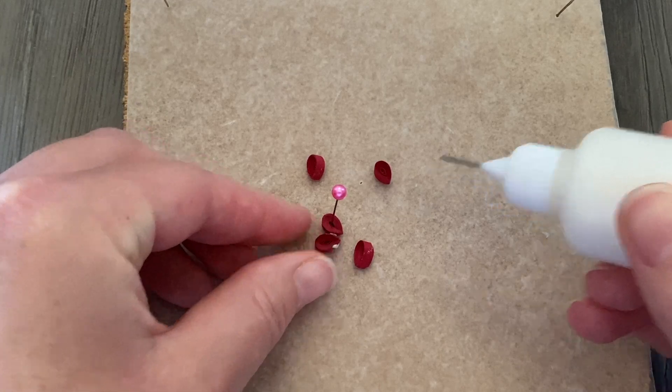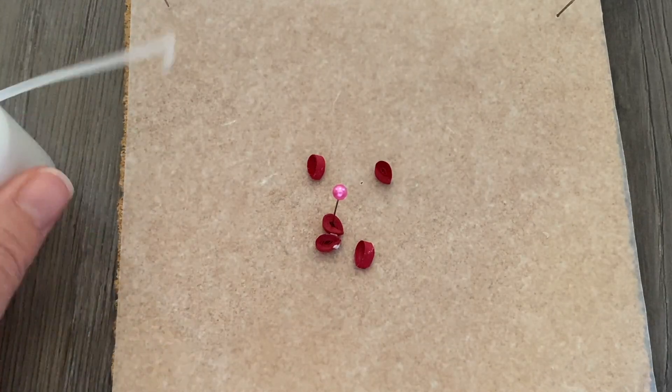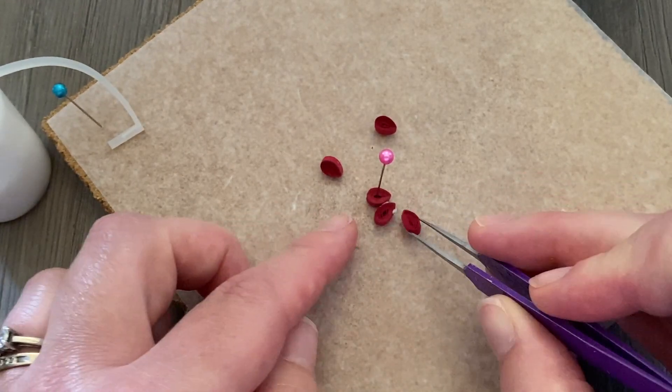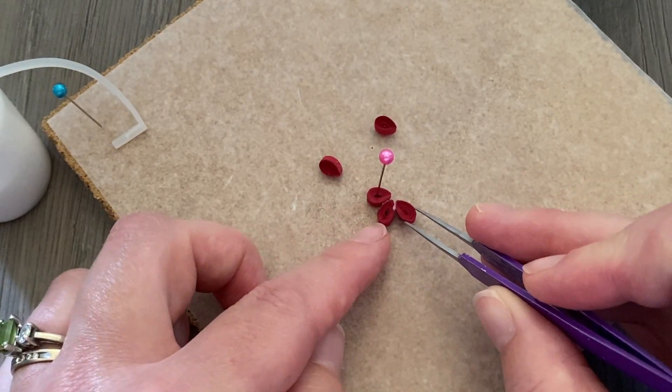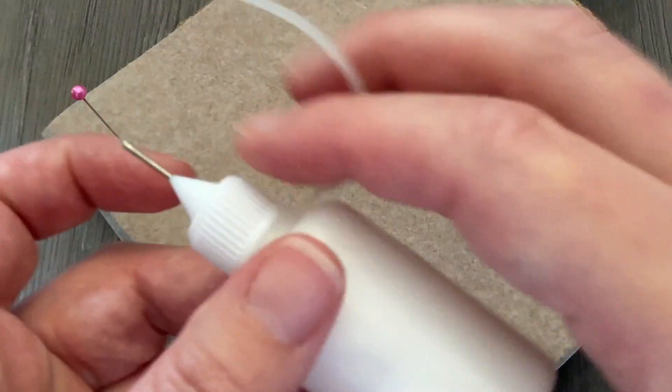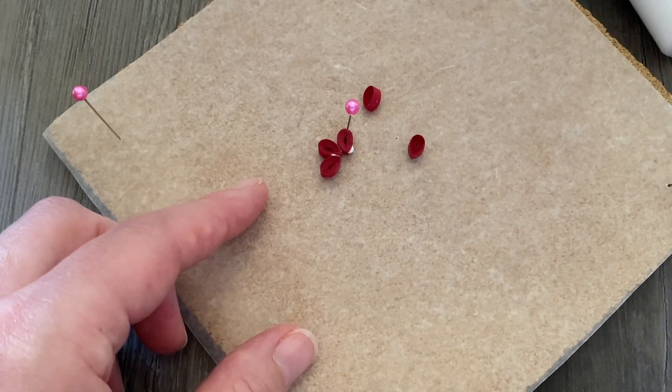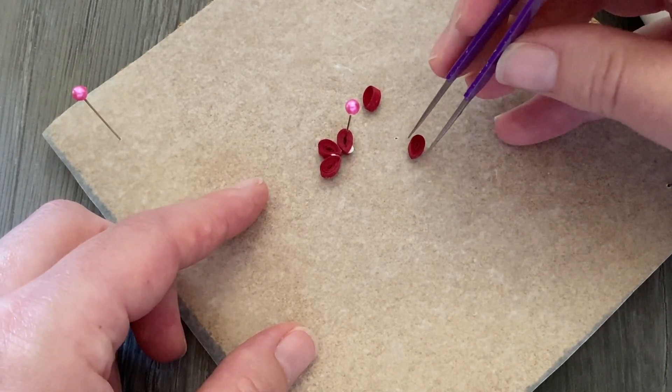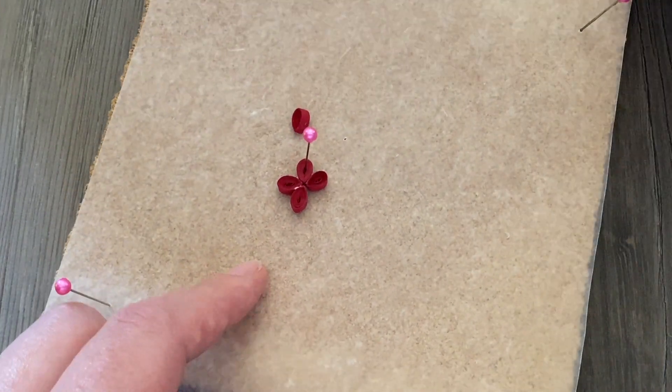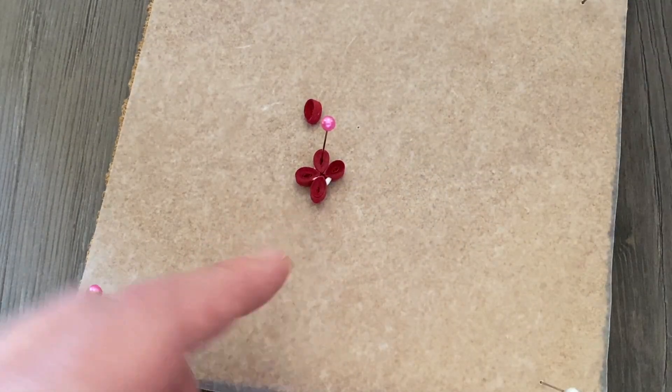If you want to use tacky glue, it will make it a little bit more secure more quickly, but Elmer's glue works just fine. These are so tiny that having a pair of tweezers does help put them together. I do want to mention with any of these flowers, you can change the colors. You can make these for spring or summer. These just happen to be what I'm using for fall.